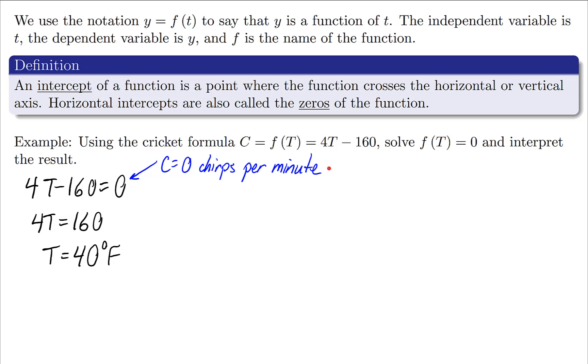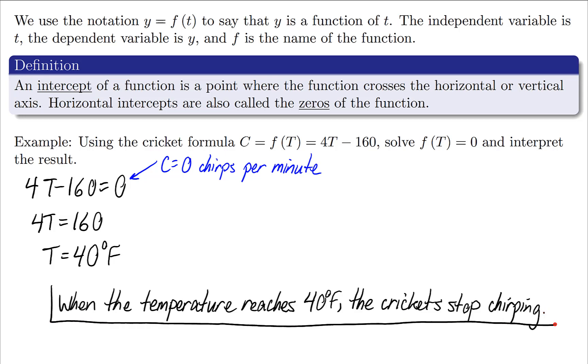Remember, t was in degrees Fahrenheit, and it might be worth noting that setting it equal to zero is saying C is equal to zero chirps per minute. So when we're looking at these intercepts, oftentimes we want to make an association where one variable is zero and the other variable is found to be some value. In this case we'll say: when the temperature reaches 40 degrees Fahrenheit, the crickets stop chirping.